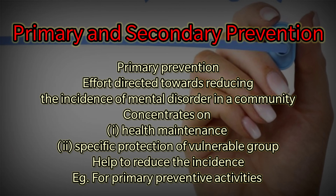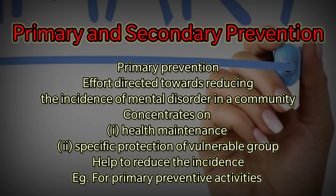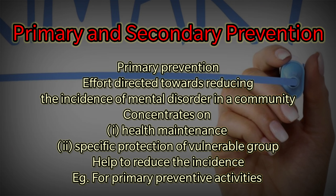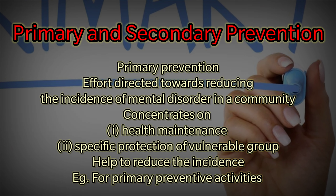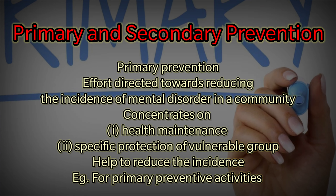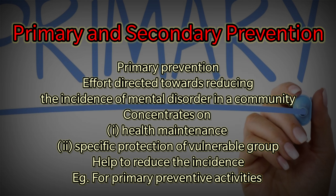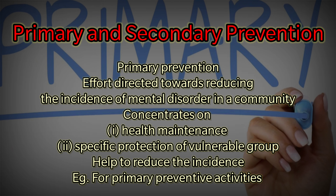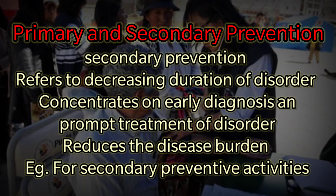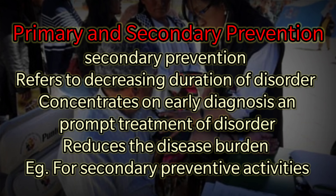The next question: differentiate between primary and secondary prevention. Primary prevention refers to efforts directed towards reducing the incidence of mental disorder in a community. It concentrates on health maintenance and specific protection of vulnerable groups, helping to reduce the incidence of mental illness.